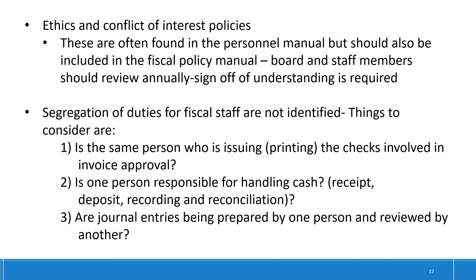One area that we review is the ethics and conflict of interest policies. We find that these are typically found in the personnel manual or maybe in the board of directors records, but these policies should be included in your fiscal policy manual. We would also like to remind you that these policies should be reviewed and signed off on annually by all governing board members and employees.